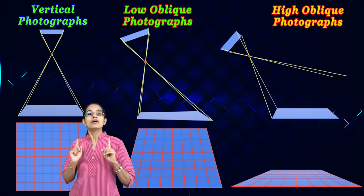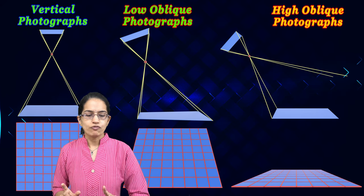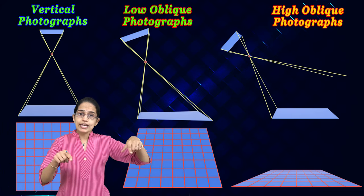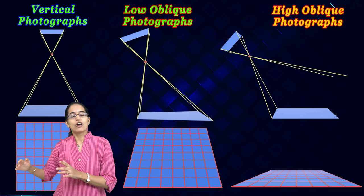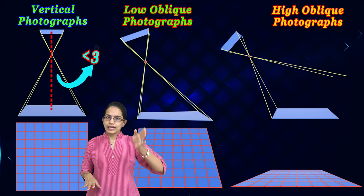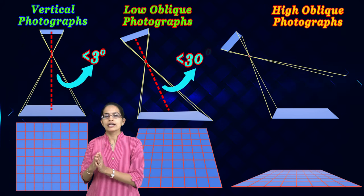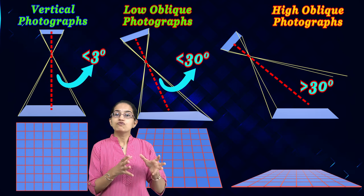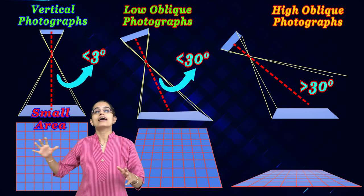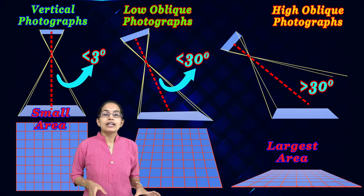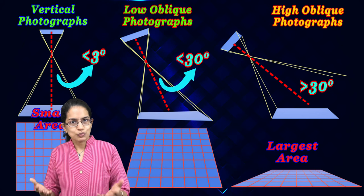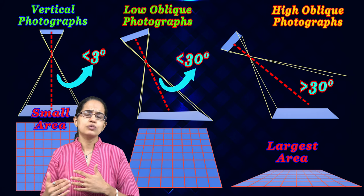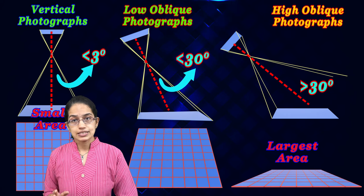To summarize the first classification: vertical photographs produce a square shape, while low oblique or high oblique produce a trapezoid formation. The angle should be less than 3 degrees for vertical, up to 30 degrees for low oblique, and more than 30 up to 60 degrees for high oblique. Coverage is smallest for vertical and highest for high oblique. Vertical photographs are used as topographical maps; low oblique for military surveys; and high oblique for illustration purposes.